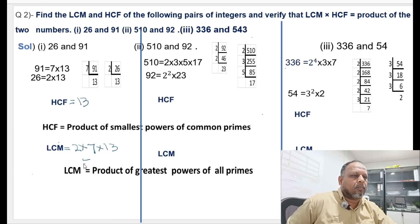The first bit is solved. Now moving on to the next bit, we have to check whether the product of the two numbers equals HCF multiplied by LCM.